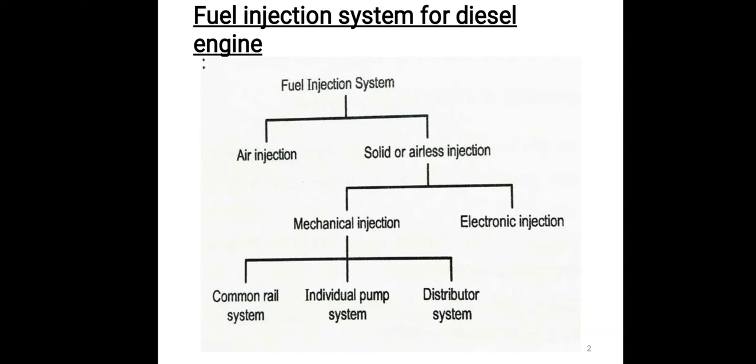Fuel injection system korn korn se hain? Air injection or airless injection. Airless injection me two types ke ati hain: mechanical injection or electronic injection. Mechanical injection me common rail system, individual pump system or distributor system.